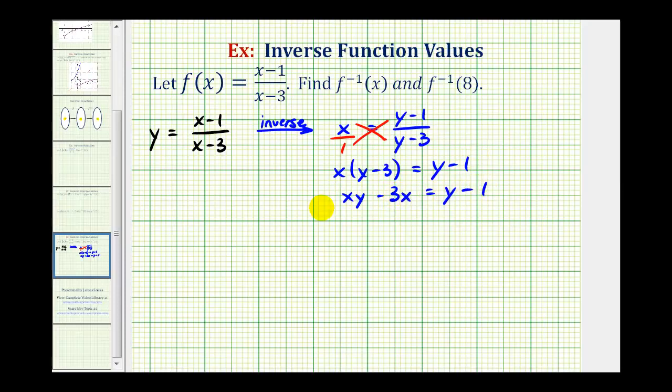Our goal is to solve for y. Since there are two terms that contain the factor y, we need those two terms on the left and all other terms on the right. Subtracting y from both sides gives us xy - y - 3x = -1.